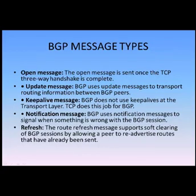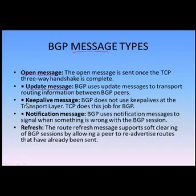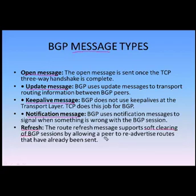Next, let's look at BGP message types. The Open message is sent once the TCP transport session is established. Update messages are used to send routing updates across the BGP peering. For Keepalive, BGP relies on the TCP transport layer. Notifications are sent across the peering to notify neighbors if something is wrong. Finally, Refresh messages allow you to soft-clear the BGP peering — once you've updated routing information, you can clear the BGP session so that it refreshes your routing table across the peering.